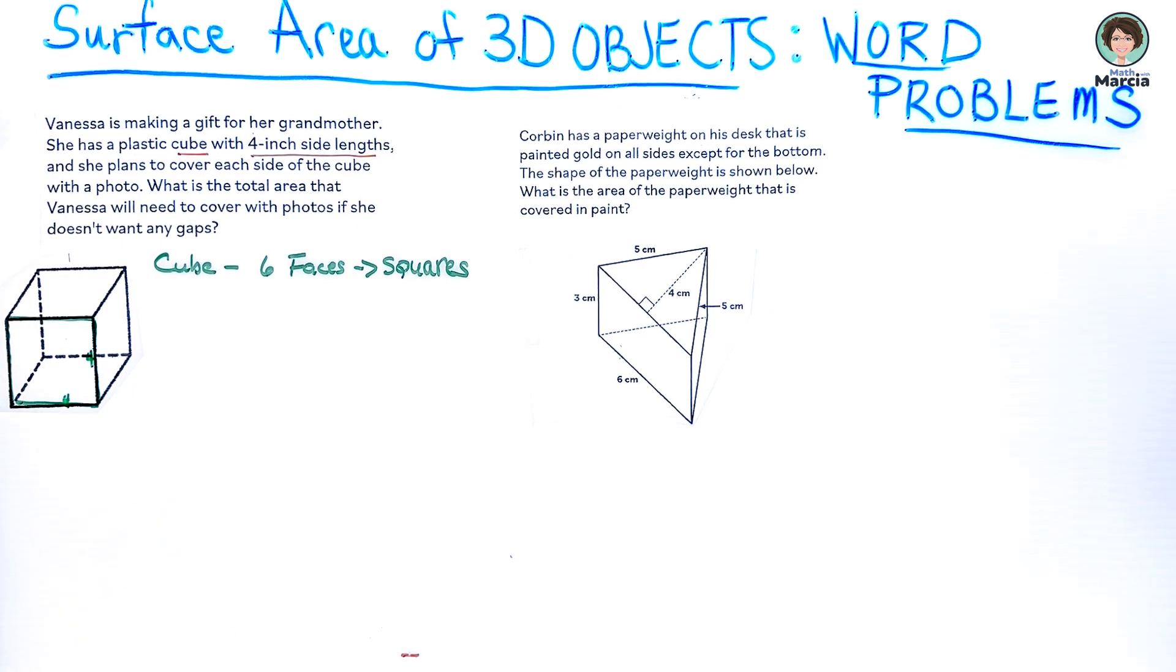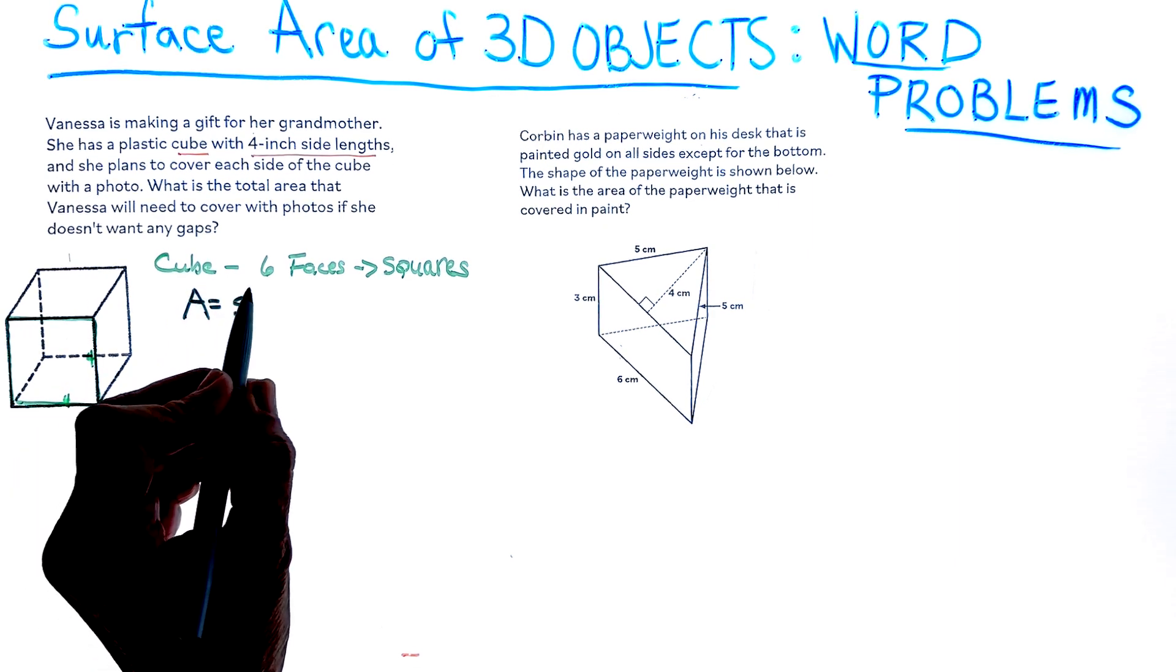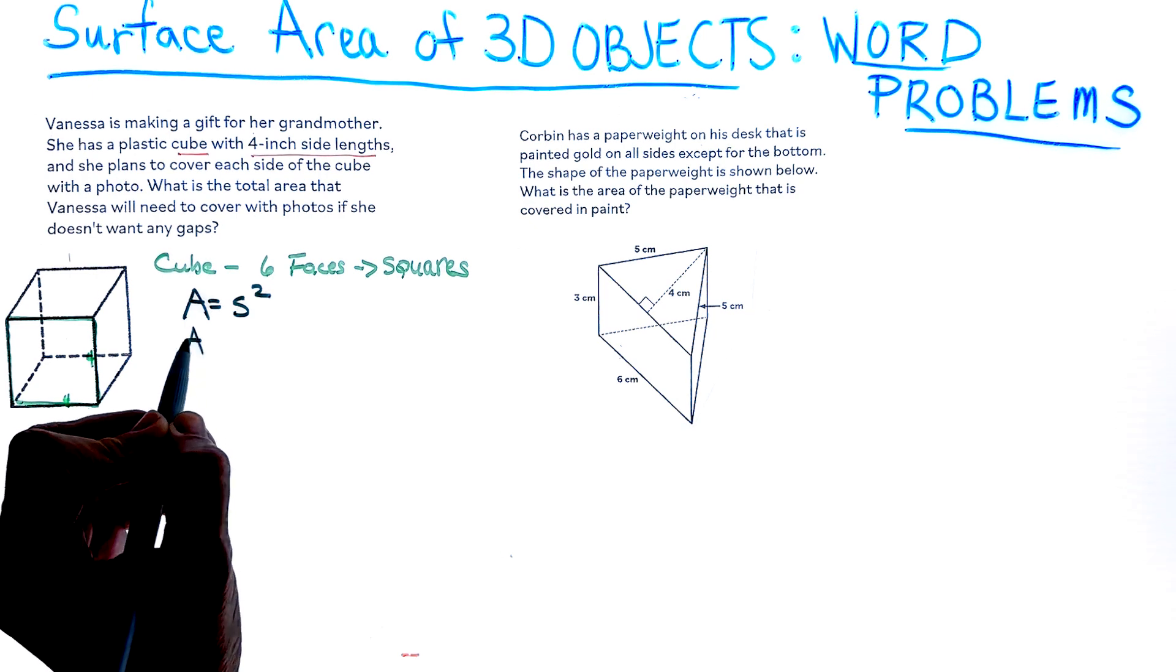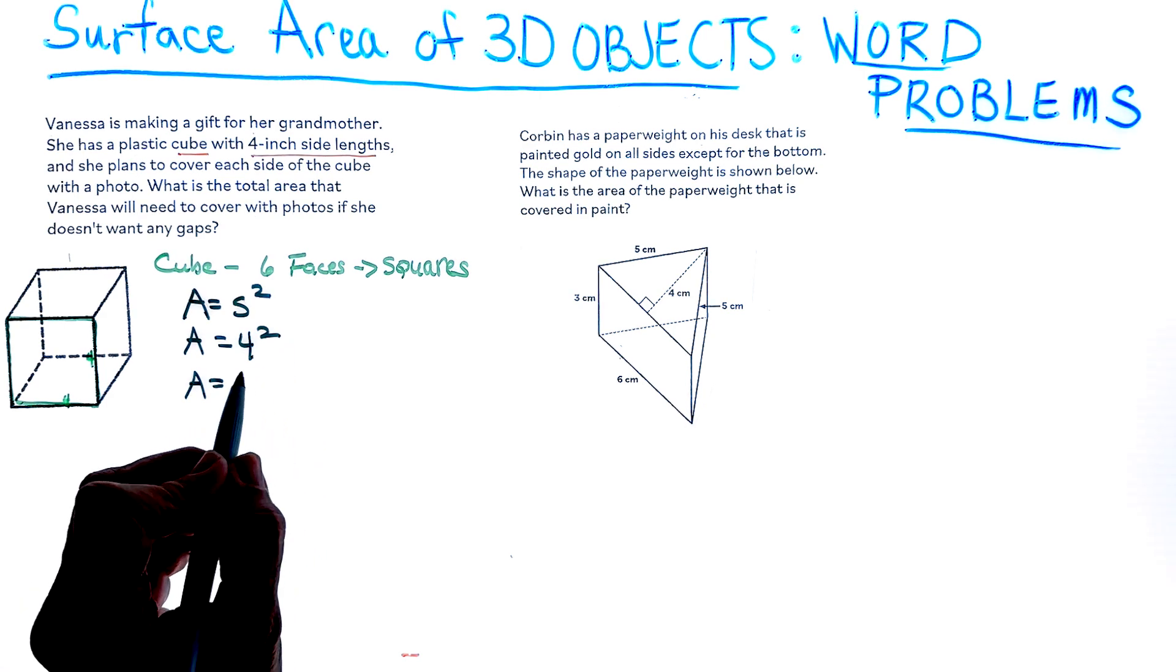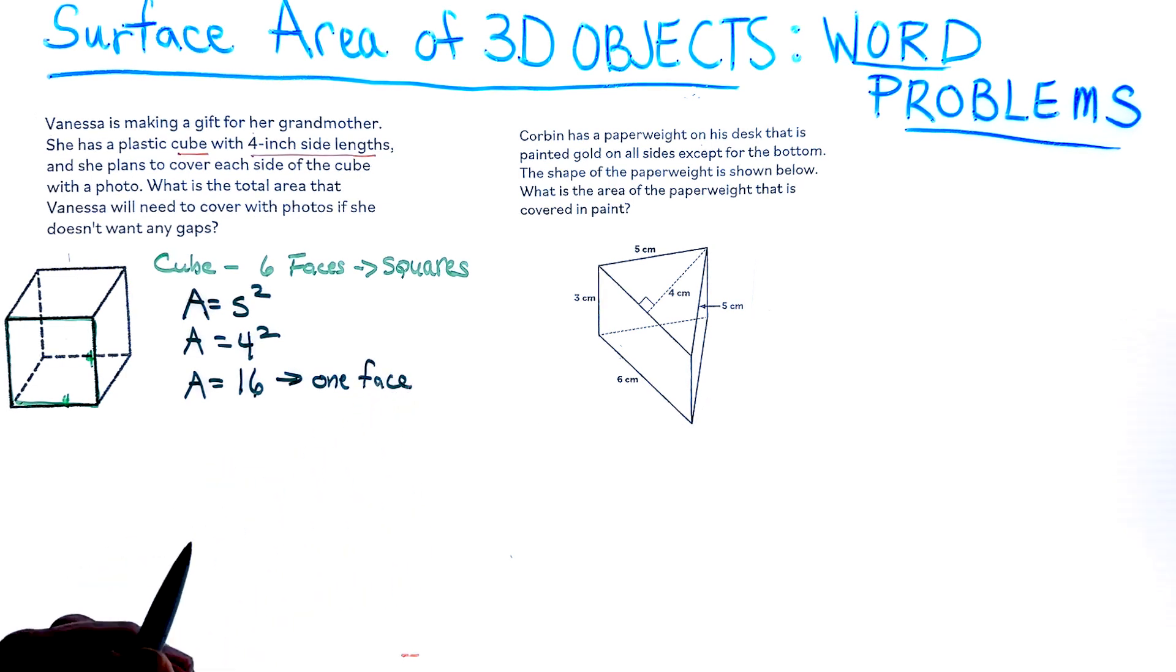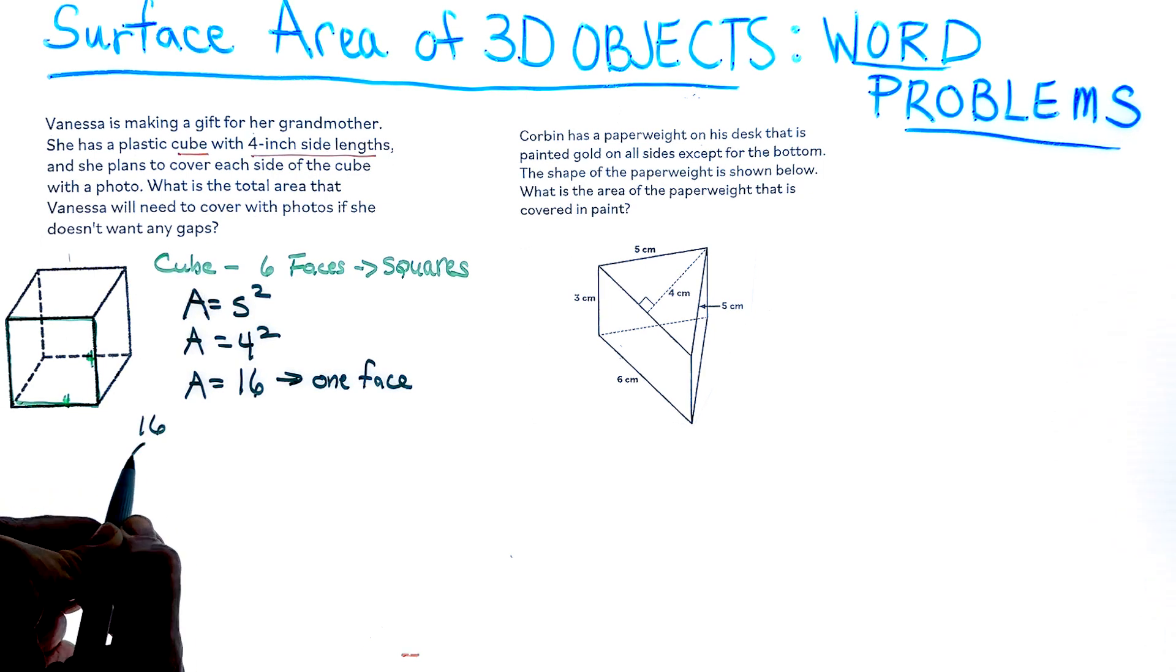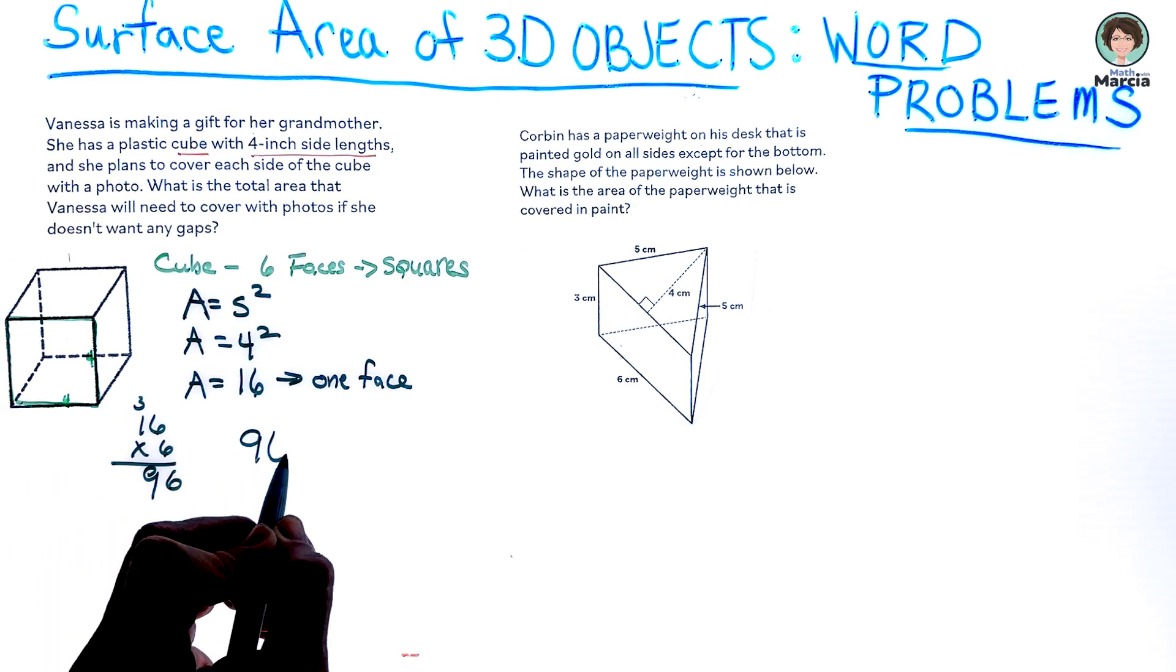I am going to pick my formula. I could do area equals length times width but that's for a rectangle, so I'm going to do area equals side squared. We have area equals 4 squared, and area equals 4 times 4 is 16. Well that is only for one face and we know it has six faces, so we are going to do 16 times 6.